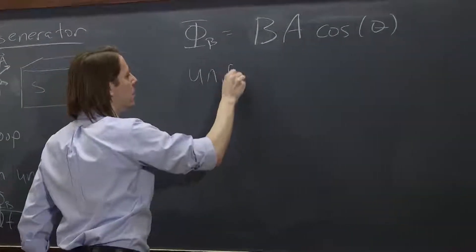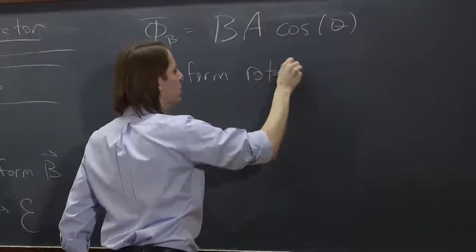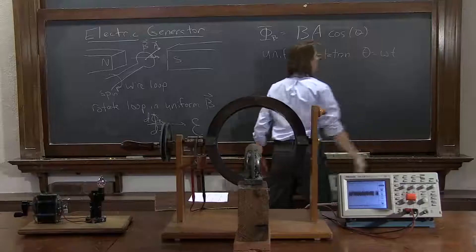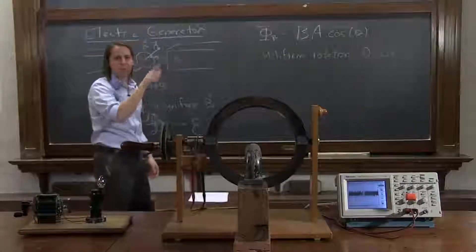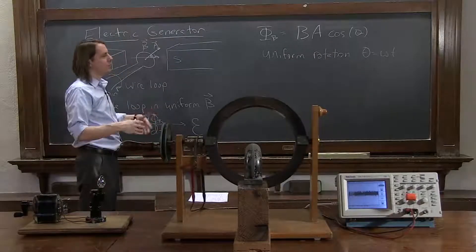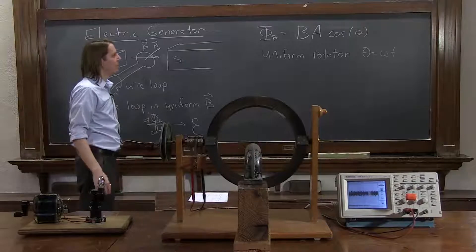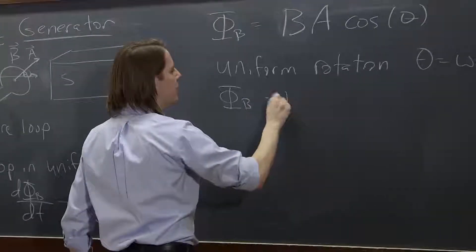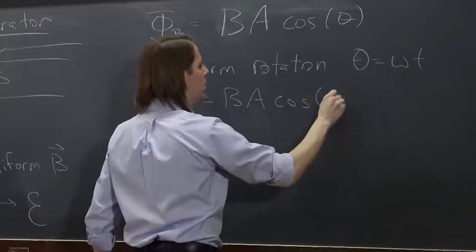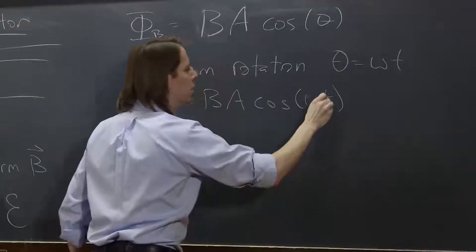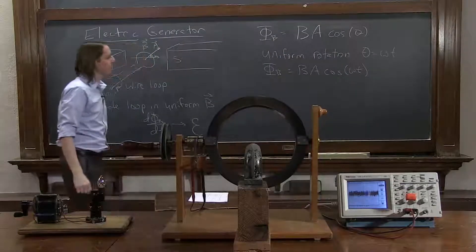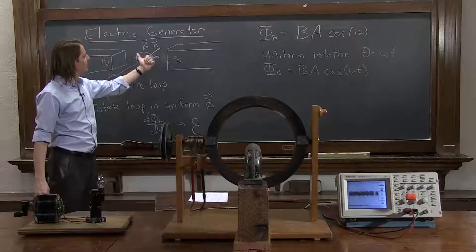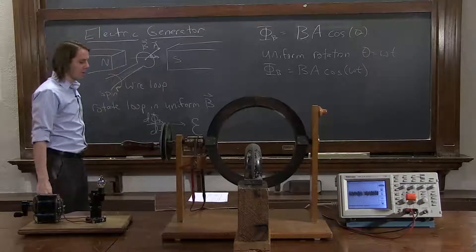So for uniform rotation, theta is omega t. That just means we spin at some frequency omega. If you want to think of it in terms of hertz, it's two pi times the frequency f times the time. So all we've got to do is plug that into theta, and we get the flux as a function of time: B A cosine omega t. And that's good. It can go positive and negative. As the cosine goes positive and negative, the A vector can be along the B field or point opposite. Everything makes sense.